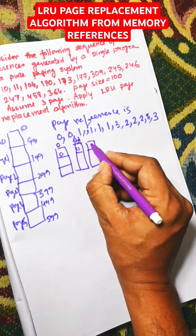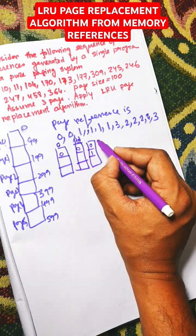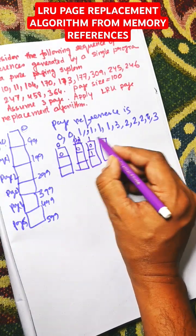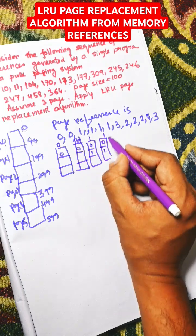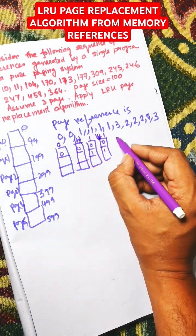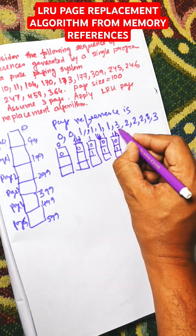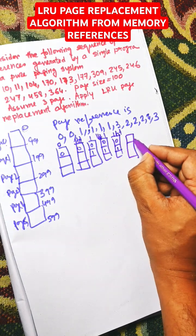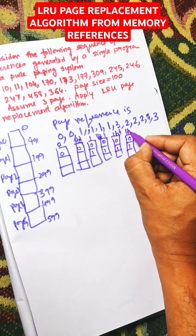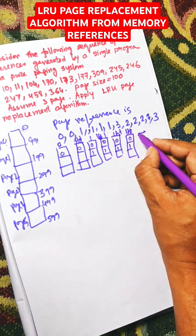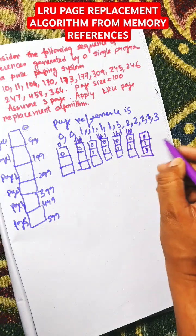Next one is 1, so we have 0 and 1. Next one is again 1, this is a hit. Again 1, so this is also hit. Now 3 will be placed in the third position of the frame.